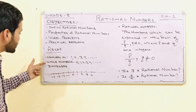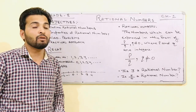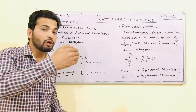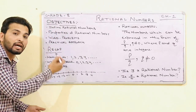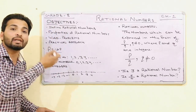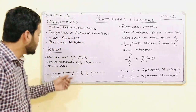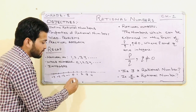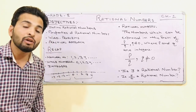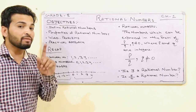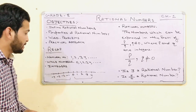Let's move to the third step: integers. In grade 7 you have done integers. What are integers? The collection of whole numbers together with the negative numbers are known as integers. We have done this in grade 7, chapter 1.